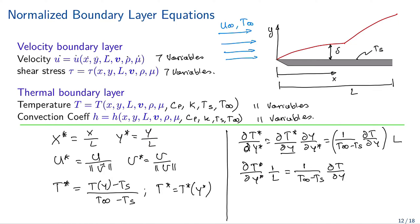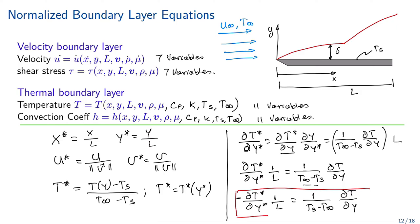Multiplying by negative one and swapping terms: minus dT*/dY* times 1/L equals (1/(Ts - T∞)) · dT/dY. We will see why defining these variables is useful further ahead.